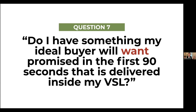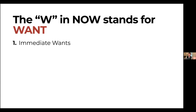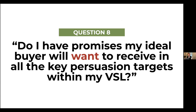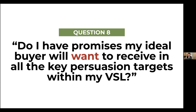Use this one: deliver a promise in that first 90 seconds that you're going to deliver something. Boom — you've got it made. Immediate wants, then long-term wants. Do I have promises my ideal buyer will want to receive at the key persuasion targets within my VSL? You need to understand the difference between wants and needs. A want fulfilled is usually a sign that a need has been met. Wants are the juicy things that sell. Needs are what people need to do to get what they want.